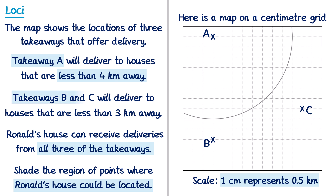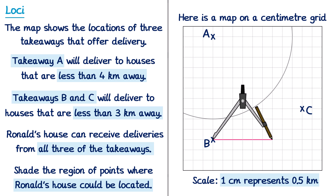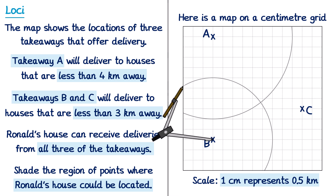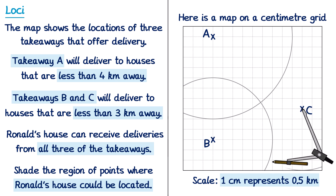For takeaways B and C, which deliver only within 3km, we repeat the same process but with a 3km radius — measuring out 0.5km increments to reach 3km. We draw a circle at B and another at C. Ronald's house must be inside all three circles, so the only valid region is the overlapping area in the middle. Sometimes exam questions ask you to label this region R, in which case you simply write R on the shaded area.